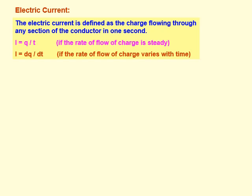If the rate of flow of charge is steady, the flow of current is called steady flow of current. So I is equal to q by t.